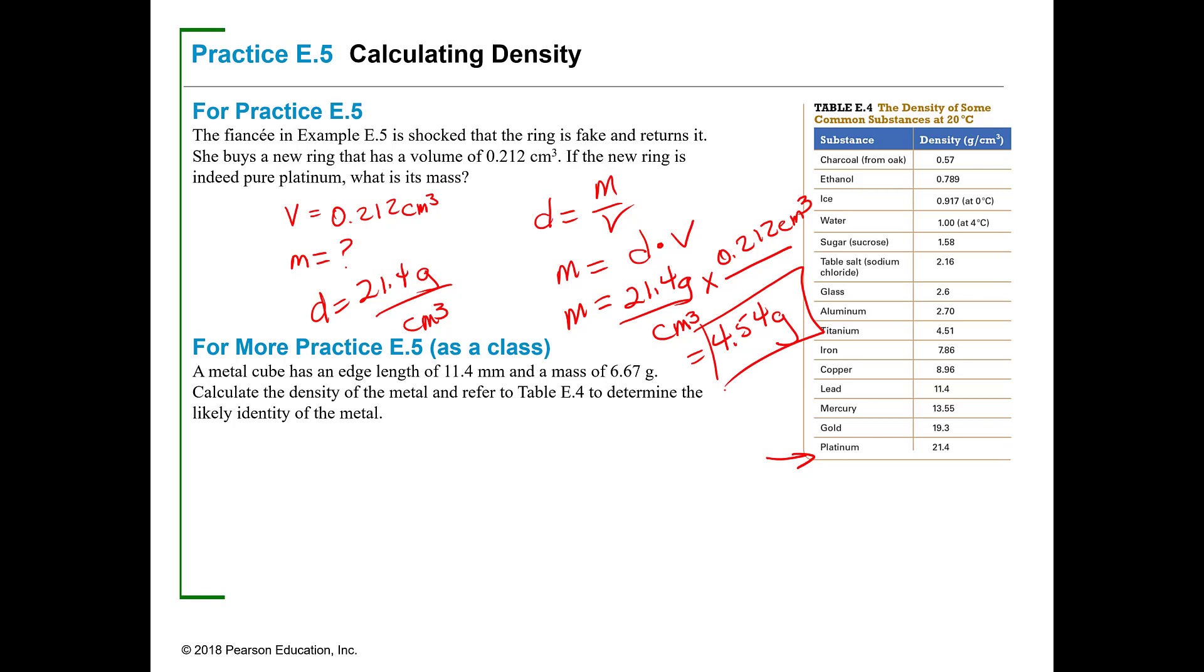I'm going to give you a little hint on this for-more-practice one because you're getting cubic meters. If you have a cube, that means that all the sides are the same, and in this case they're 11.4 millimeters. I suggest you change that to centimeters, and then since all sides are the same, it's going to be